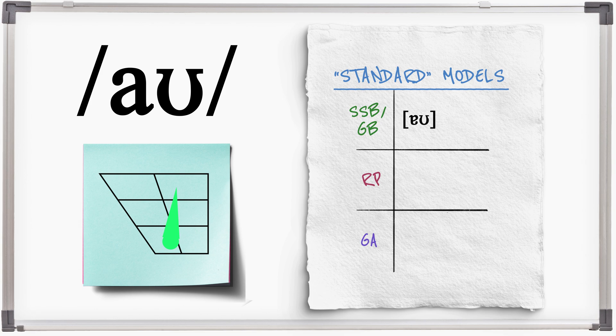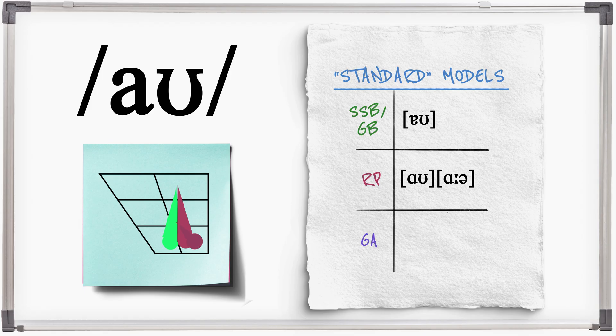AU around town. In RP, AU starts centrally or to the back. AU around town. And in old fashioned RP the starting point is open, back and can be longer with less movement at the end. AU around town. In general American, AU has a more front starting point. AU around town.